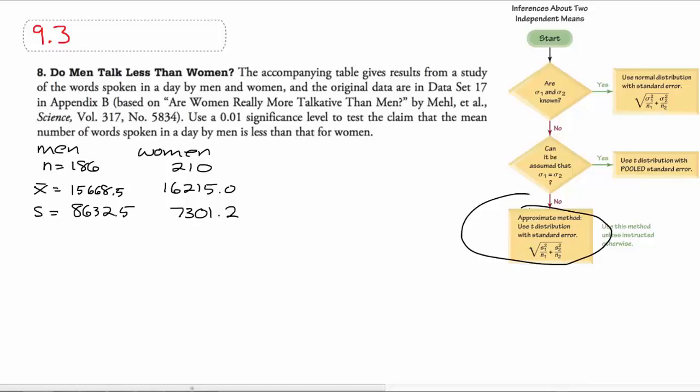Before we jump into the calculations, I want you guys to take a second and look at this data and ask yourself, what do you think the answer would be? We're basically asking the question, are these two groups statistically significantly different? Well, we have relatively similar sample sizes, 186 and 210, and then relatively similar means, 15,668.5 versus 16,215. Yes, that's a difference of about 600, but it's a difference of 600 when your standard deviations are both over 7,000. Those are big standard deviations. So those two means are a fraction of a standard deviation away from each other. So are they going to be statistically different? And you should all be screaming at your video screens going no. We know right off the bat that the answer to this is going to be we're going to fail to reject the null hypothesis, because the null hypothesis is going to be that they're the same.